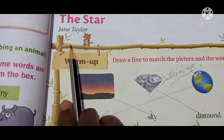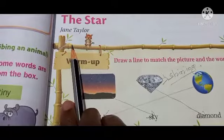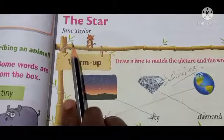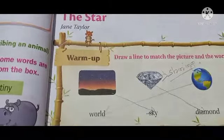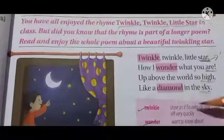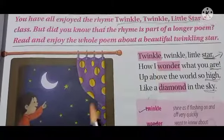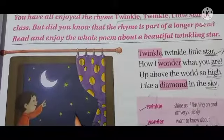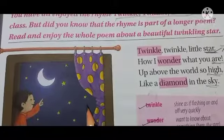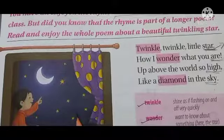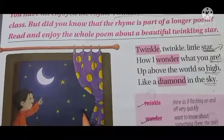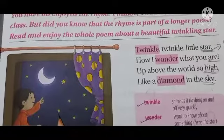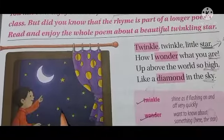This poem is for children, very famous, and written by Jane Taylor. Here in this poem, the child is wondering about the stars — how the stars are twinkling in the sky. The child compares the star to a diamond.